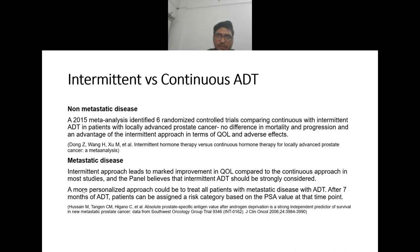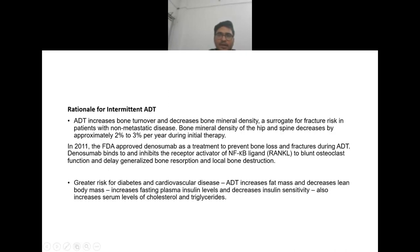A more personalized approach is to treat all metastatic disease patients with ADT, and after seven months of ADT, patients can be assigned a risk category based on PSA value at that time. The rationale for intermittent ADT is that ADT increases bone turnover and decreases bone mineral density, a surrogate for fracture risk.